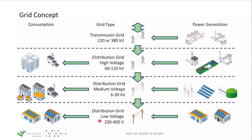Finally, we have the low voltage distribution grid with a voltage of 230 to 400 volts — that's the voltage you know from your wall socket. On the power generation side, PV systems installed on roofs of households, small shops, or schools feed electricity into this low voltage grid. On the consumption side, each building and household takes energy from the low voltage grid, so the distribution within a city is typically done at this voltage level.